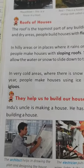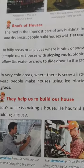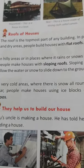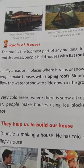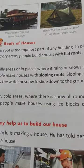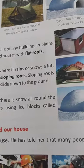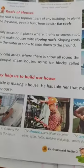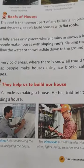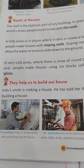In very cold areas, there are sloping roofs — in places where a lot of snow falls, many people make houses with sloping roofs. Sloping roofs allow the water or the snow to slide down to the ground.